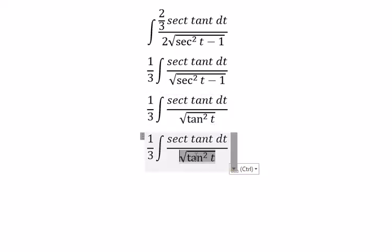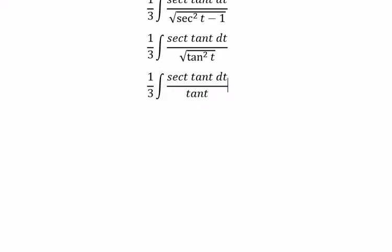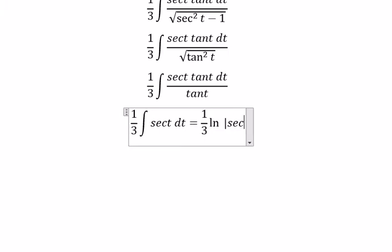And this one we can change to tan t. And now we just get sec t dt. We get 1 over 3 multiplied with ln of the absolute value of sec t plus tan t.